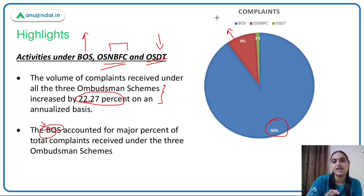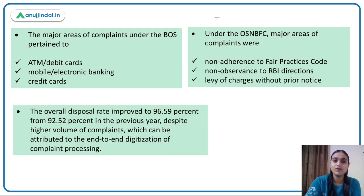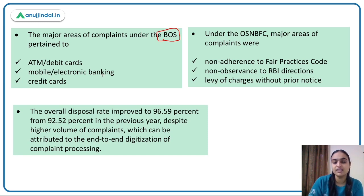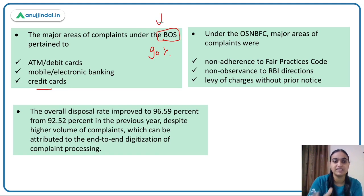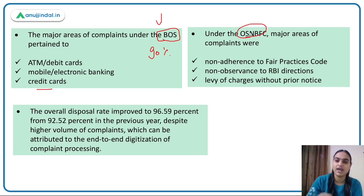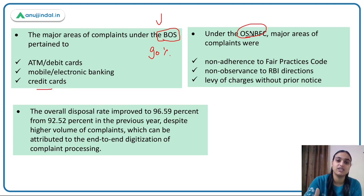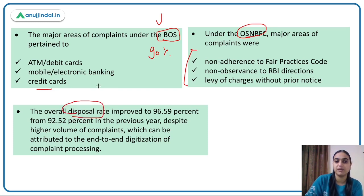Under the Banking Ombudsman Scheme, major complaints are related to ATM and debit card usage, electronic banking, and credit card issues. Under OS-NBFC, major complaints relate to non-adherence to RBI directions, fair practice codes, and NBFCs levying charges on customers without prior notice.